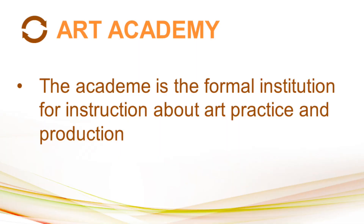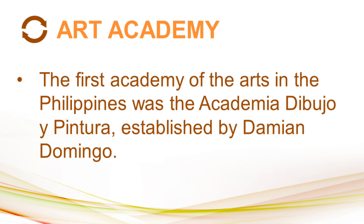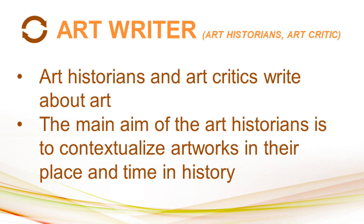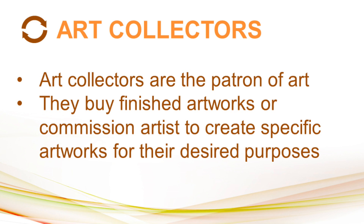Next, we have the Art Academy — the formal institution for instruction about art practice and production. A best example is the Royal College of Art in London. The first Academy of the Arts in the Philippines was the Academia de Dibujo y Pintura, established by Damian Domingo, which can be found in Manila. Next, we have art writers, who include art historians who study the history of art and art critics who criticize art. The main aim of art historians is to contextualize artworks in their place and time in history. Art critics write about art to help the public understand and appreciate art. We also have art collectors — patrons of art — who buy finished artworks or commission artists to create specific artworks for their desired purposes.